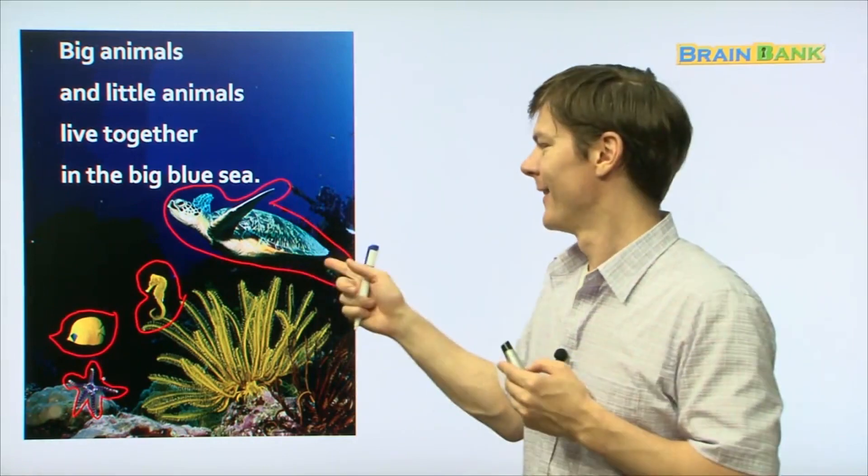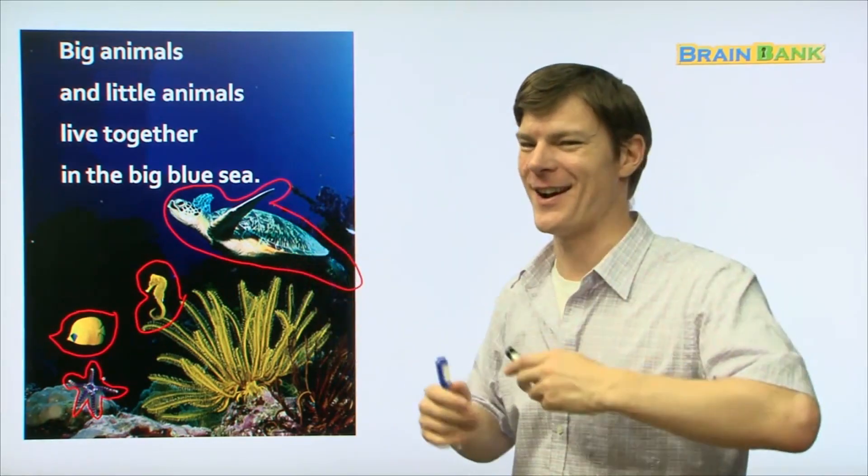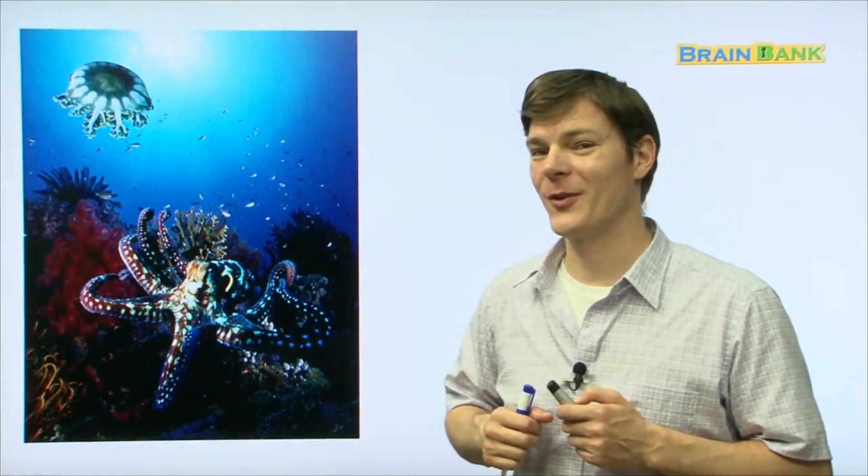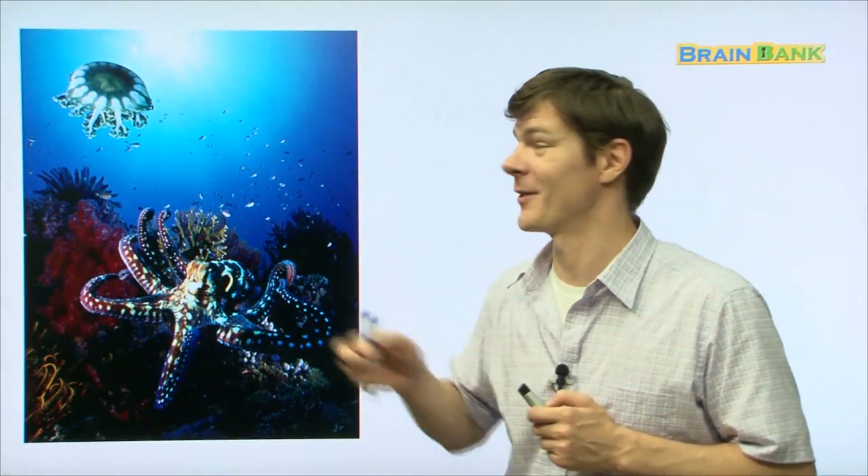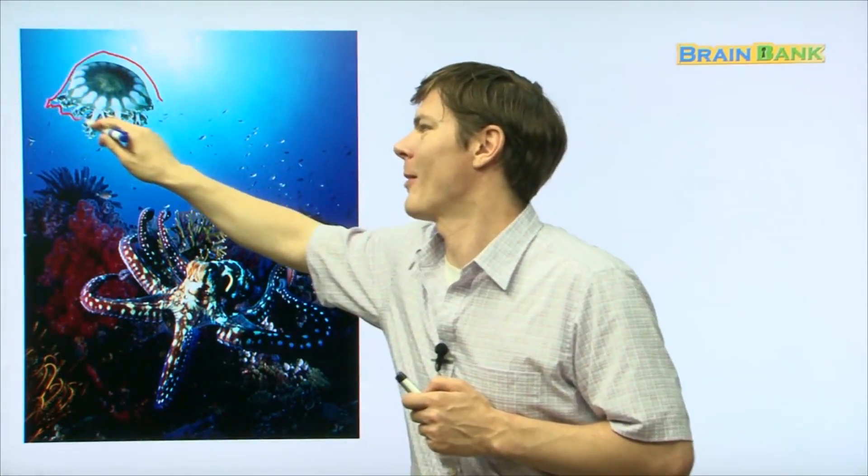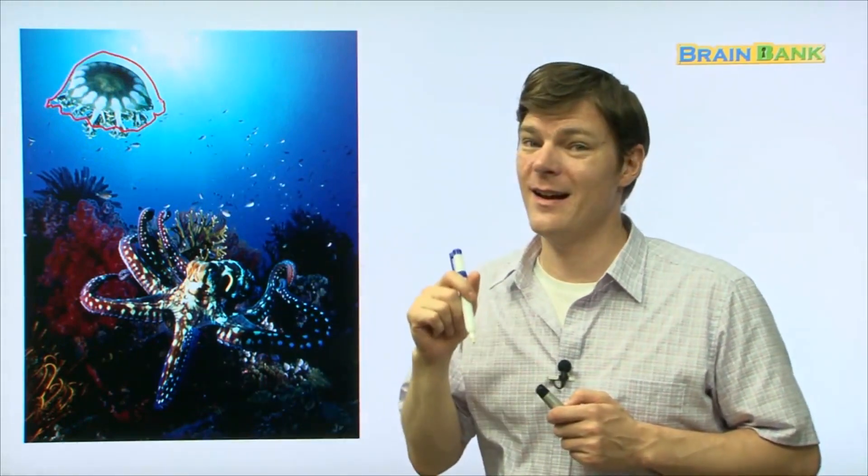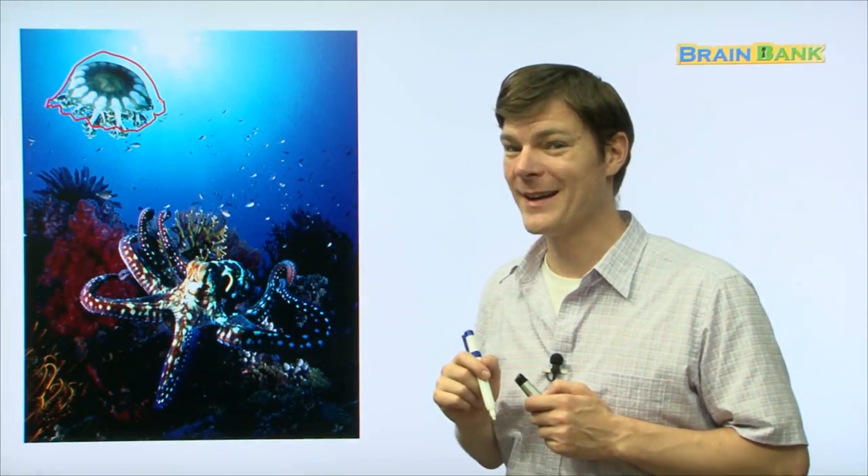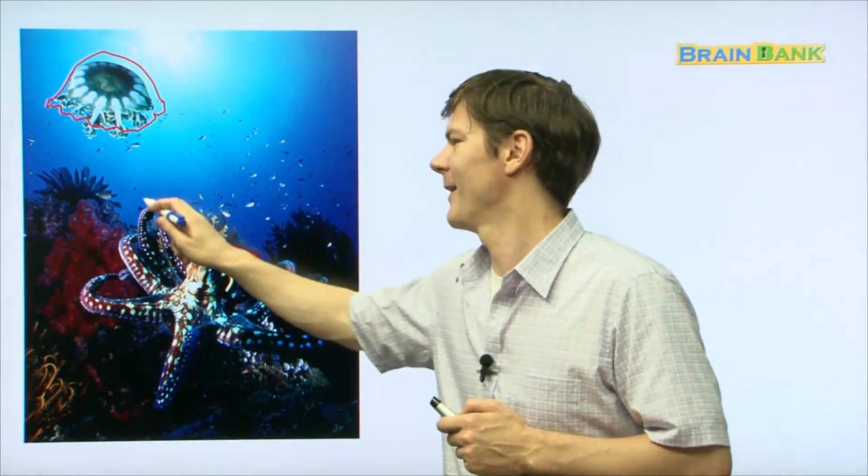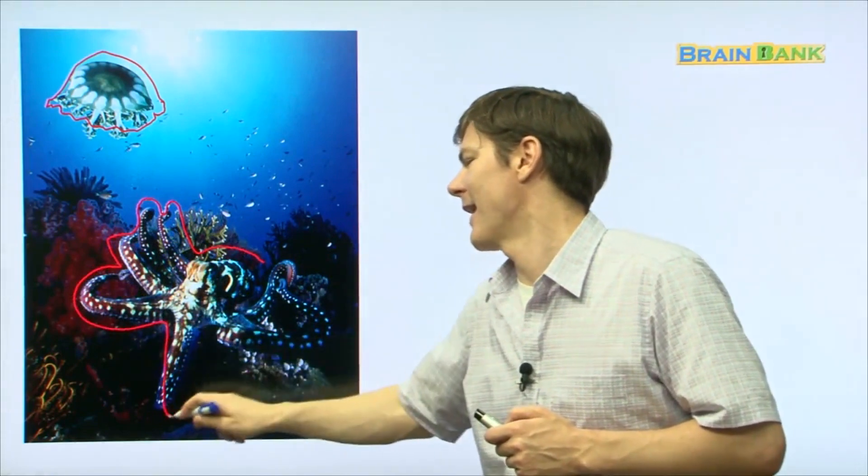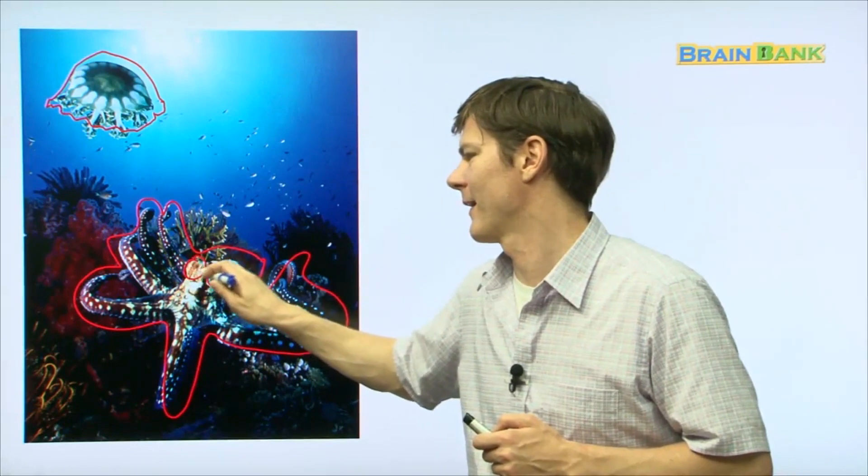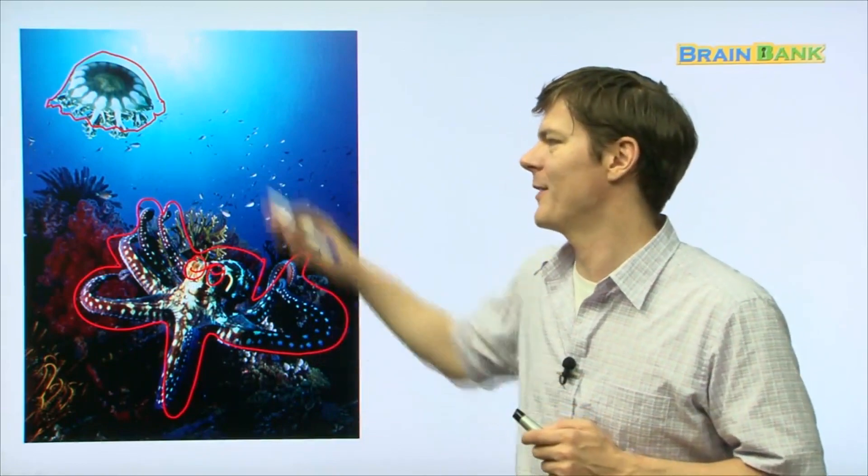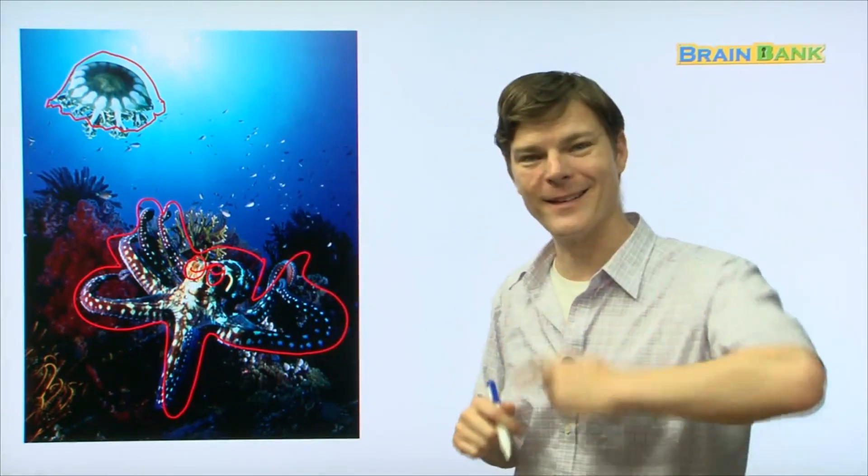Alright boys and girls, so we're almost to the end of our book and here on this page we have two last sea creatures. We have the jellyfish and then we have the octopus. Which one out of these two is the biggest? That's right, the octopus, very good.